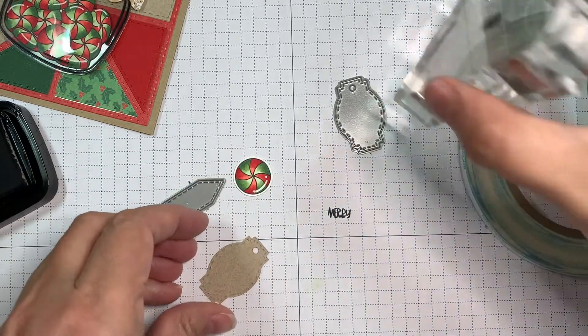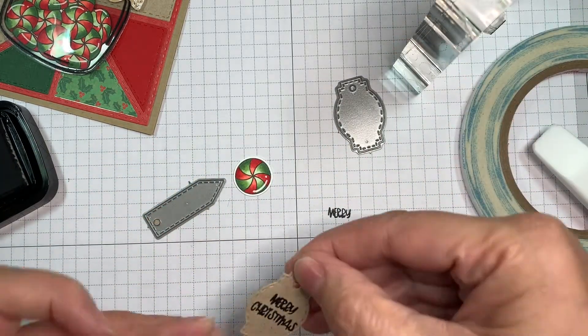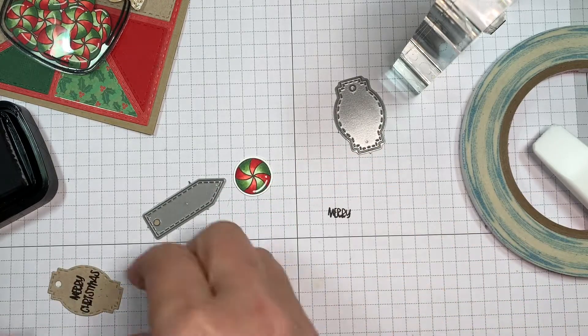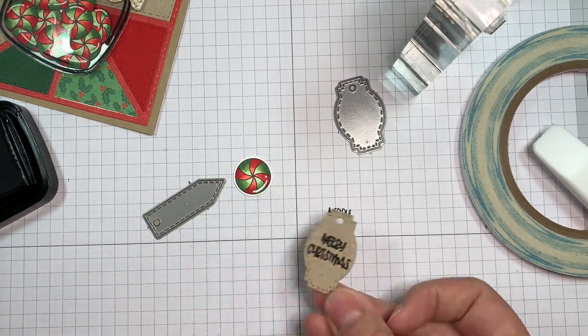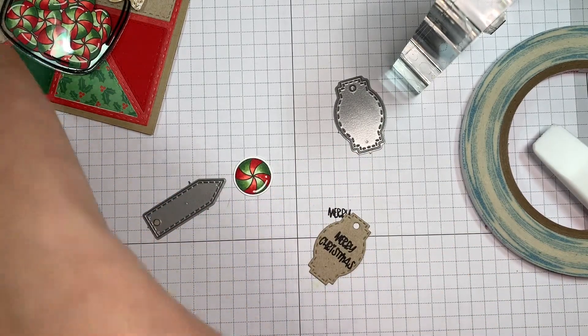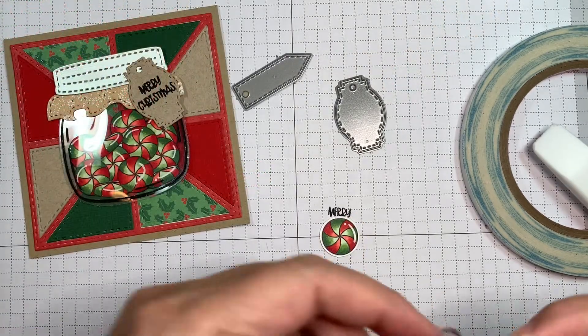So you'll notice on those colored images, I did use a Sakura white jelly roll pen and a number 10 just to add some bold highlights. I like that. I think it adds something.